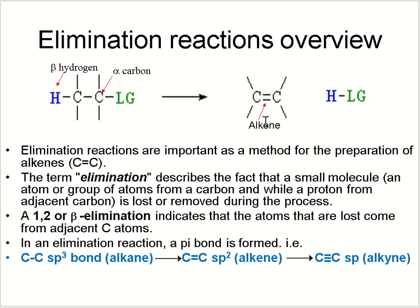You can also prepare alkynes from elimination reactions. The term 'elimination' describes the fact that a small molecule is lost or removed during the process. '1,2-elimination' or 'beta elimination' indicates that the atoms are lost from adjacent carbon atoms. In an elimination reaction, a pi bond is formed and the carbon changes from sp3 to sp2 hybridization, or sp if an alkyne is formed.